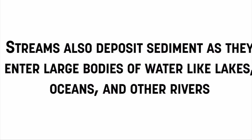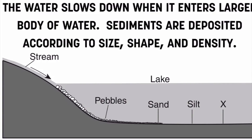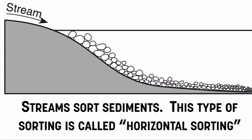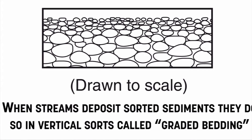Streams also deposit sediments as they enter large bodies of water like lakes, oceans, and other rivers. As the water slows down entering a larger body of water, sediments are deposited according to their size, shape, and density — for example, pebbles, then sand, then silt, then clay. This is called horizontal sorting. When sediments get deposited vertically and build up from biggest to smallest, that's called graded bedding — a vertical sort. Sorting is always a sign of water slowing down and depositing sediment.